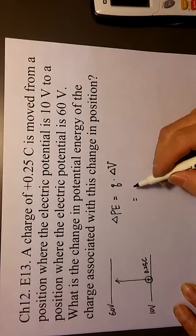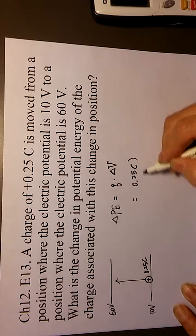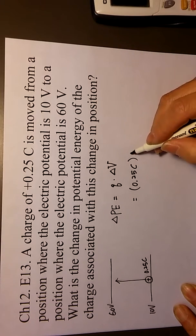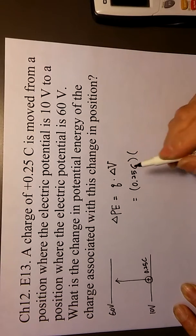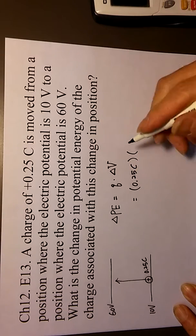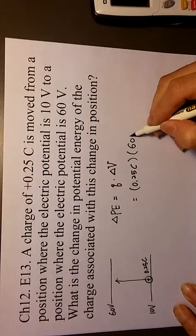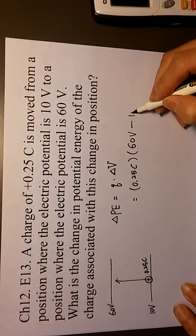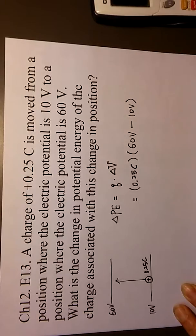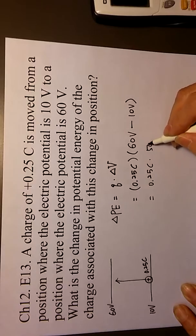And then delta V, Q is 0.25 coulomb as we can see. Then delta V equals final minus initial. The final should be 60 volt minus 10 volt. Then you will get 50 volt.